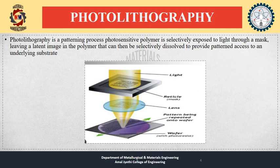Photolithography shares some fundamental principles with photography in that the pattern in the photoresist is created by exposing it to light, either directly by projection through a lens or by illuminating a mask placed directly over the substrate as in contact printing. The technique can also be seen as a high-precision version of the method used to make printed circuits. The name originated from an analogy with the traditional photographic method of producing plates for lithographic printing on paper.